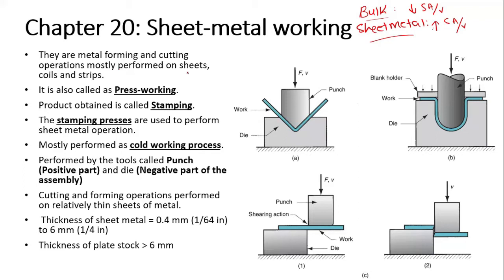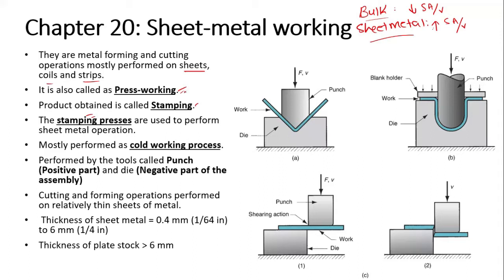Sheet metal forming and cutting operations are mostly performed on sheets, coils, and strips. It is also known as press working because they are performed on stamping presses. The product of sheet metal working is called a stamping — for example, an angle iron or a drawn cup shape would both be classified as stampings.